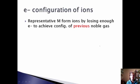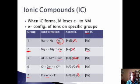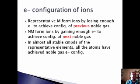Representative metals form ions by losing enough electrons to achieve the configuration of the previous noble gas. For sodium, magnesium, and aluminum, neon is the previous noble gas. Non-metals form ions by gaining enough electrons to achieve the configuration of the next noble gas — for oxygen and fluorine, neon is the next noble gas. In almost all stable compounds of the representative elements, all atoms have achieved noble gas electron configuration.